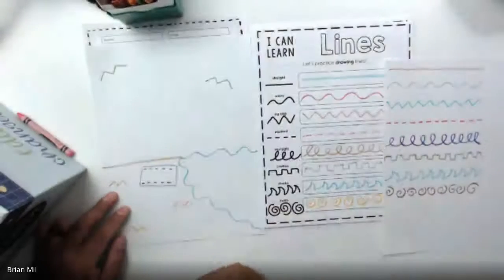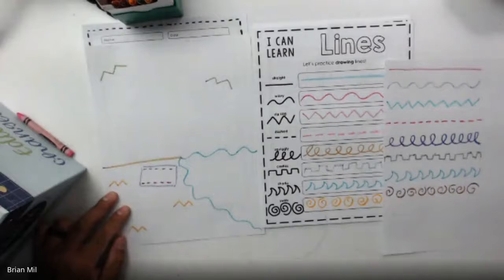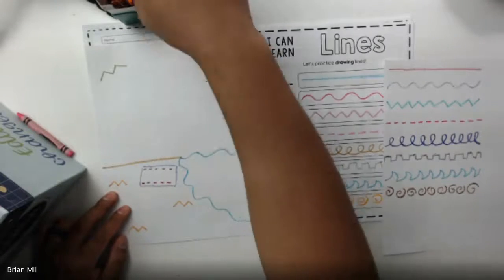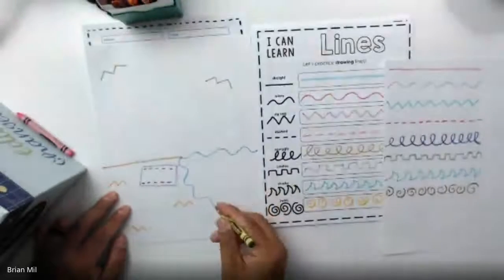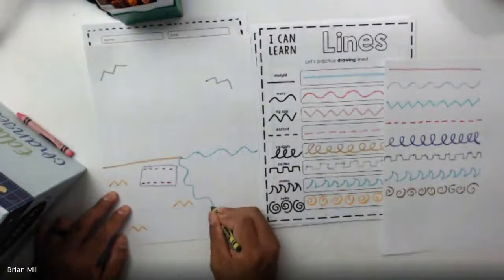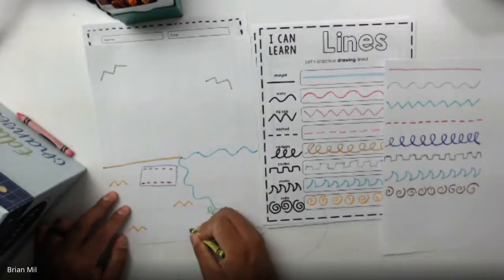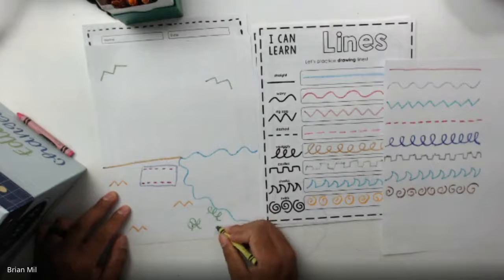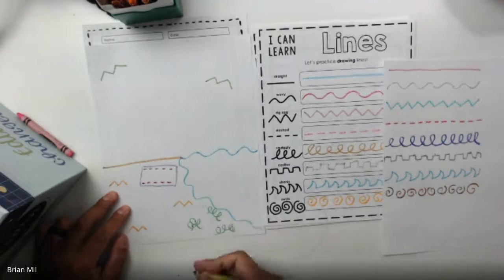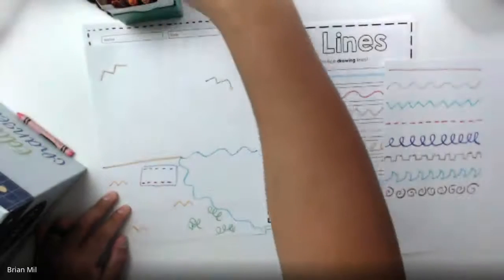All right, squiggly line. What can I do with a squiggly line? Hmm, maybe I can add some seaweed over here. I don't know. Castle, I could probably build a castle on the beach. There you go, there's my castle on the beach.